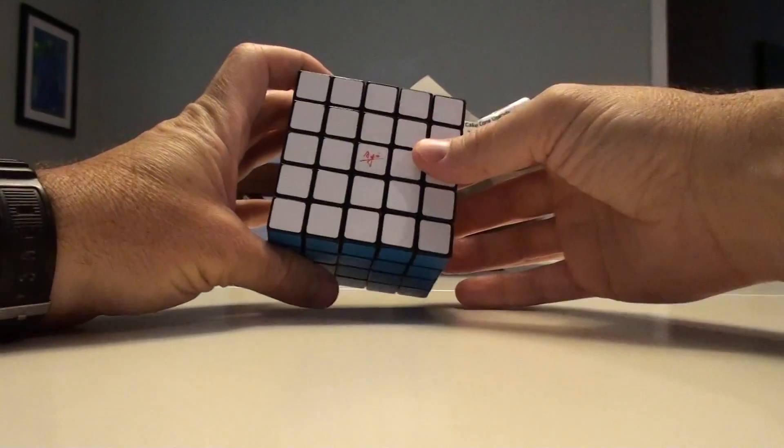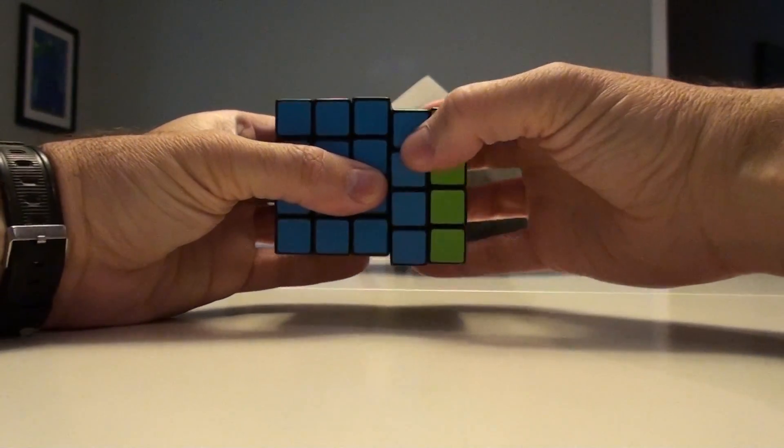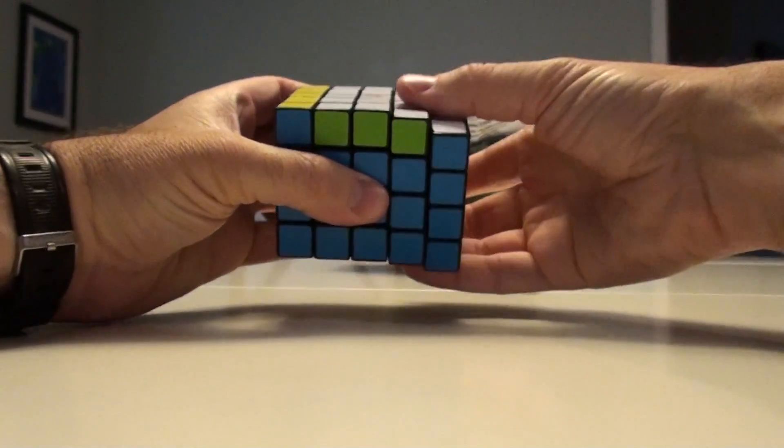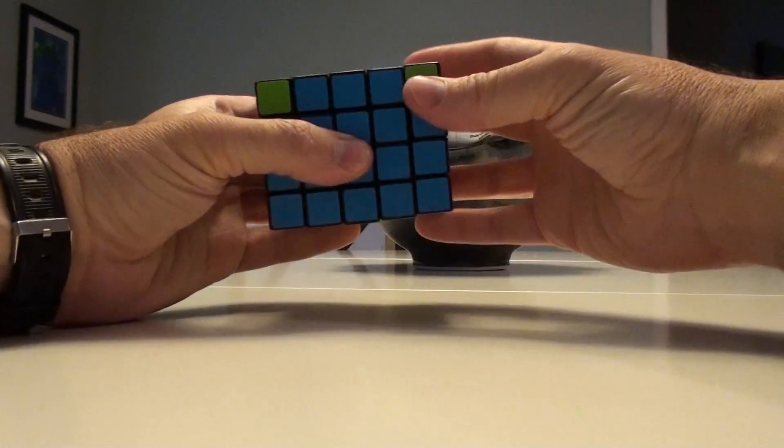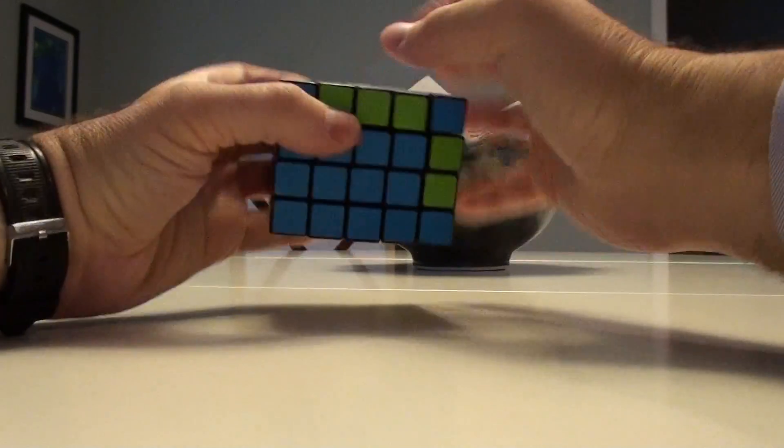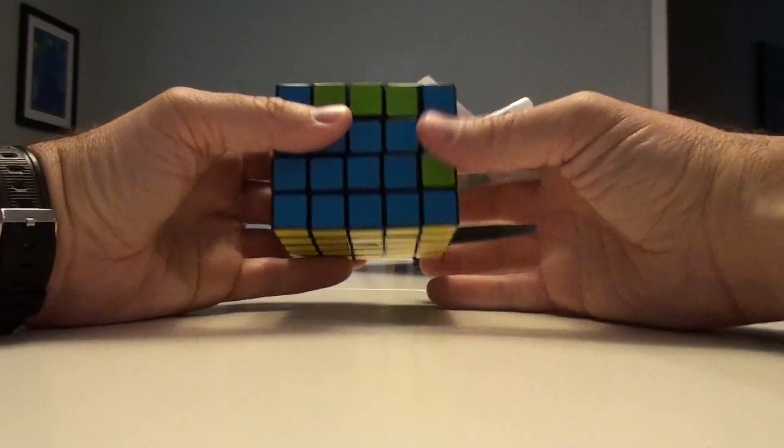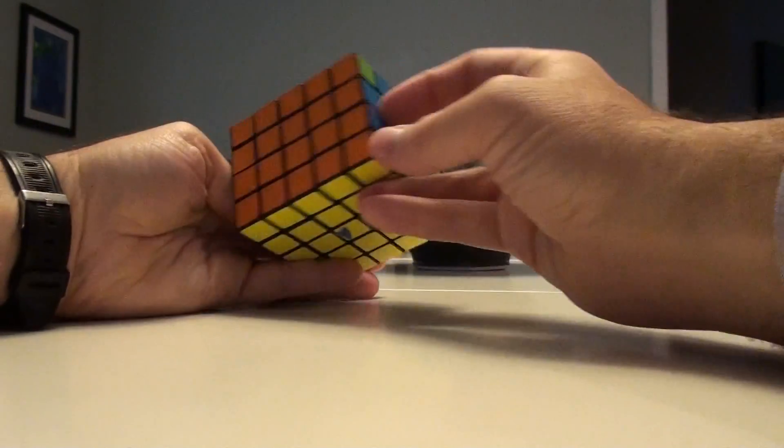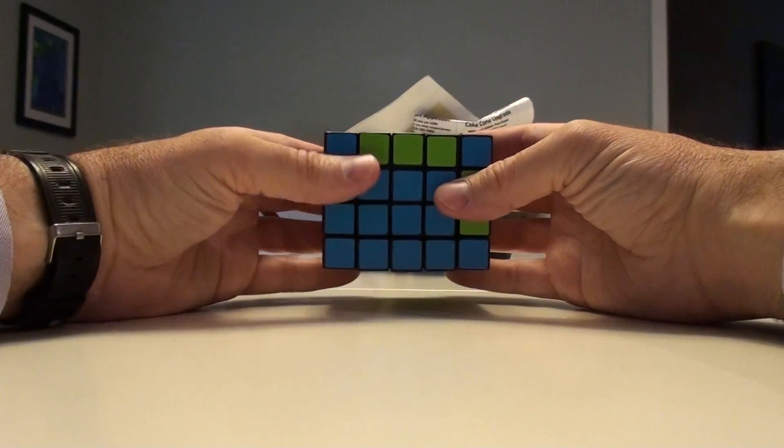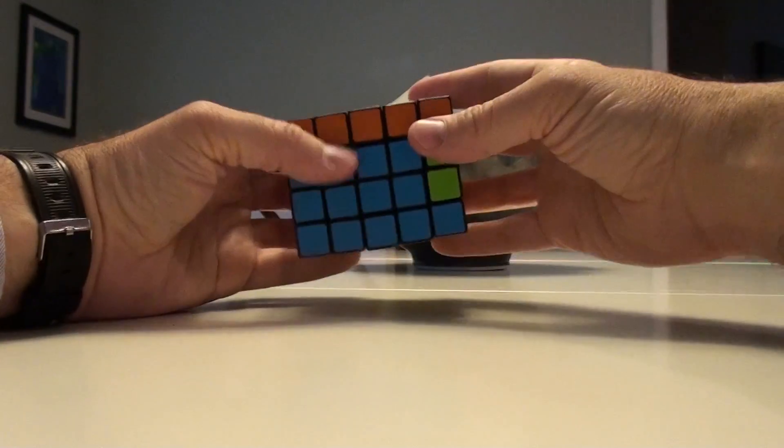But go ahead and do an opposite end swap. 2R, 2U, 2R, 2U, 2R, 2U. It swapped these two, and predictably got placement errors over here. What I'm going to do now is I'm going to turn it by one U, and then do it again, swap it again.